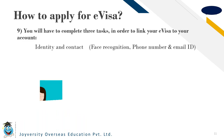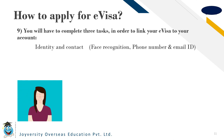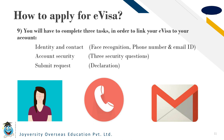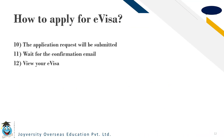You will have to complete three tasks in order to link your UK visa to your account. First: identity and contact — this includes face recognition, phone number and email. Second: account security — you will be asked three security questions. Third: submit request — there will be a declaration. Once submitted, wait for the confirmation email and view your e-visa.